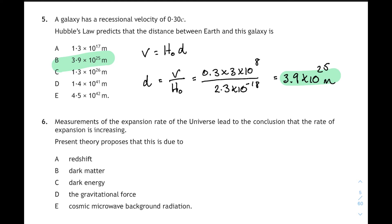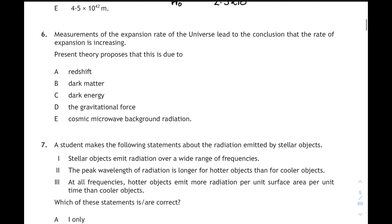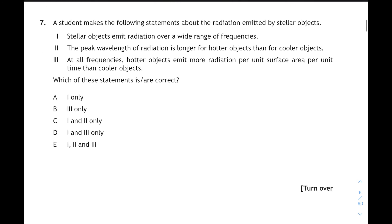Question 6. Measurements of the expansion rate of the universe lead to the conclusion that the rate of expansion is increasing. Present theory proposes that this is due to, well, the accelerating expansion of the universe is down to dark energy. Don't confuse dark energy with dark matter. Dark matter holds the galaxies together. So C for 6.